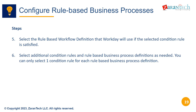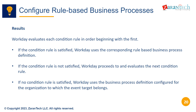Select a rule-based process definition for each condition rule you create. Add additional condition rules and process definitions as needed. Only one condition rule can be assigned per definition. When a process starts, Workday evaluates the rules in order. If a condition rule is satisfied, that process definition is used. If not, it continues checking the next rule. If no rule is satisfied, the default process definition for that organization is used. This provides very flexible configuration options for business processes.